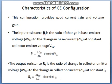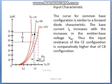Now we discuss characteristics of common emitter configuration. This configuration provides good current gain and voltage gain. The input resistance is the ratio of change in base-emitter voltage to change in base current at constant collector-emitter voltage. The output resistance is the ratio of change in collector-emitter voltage to change in collector current at constant base current.